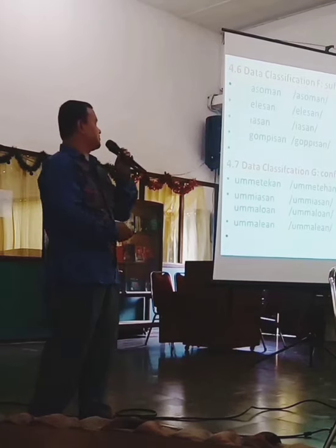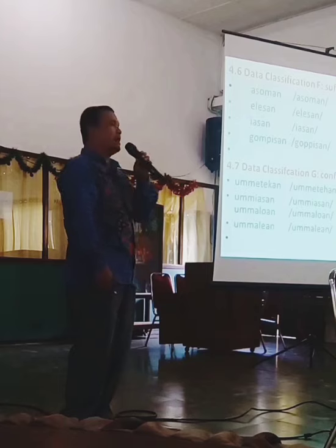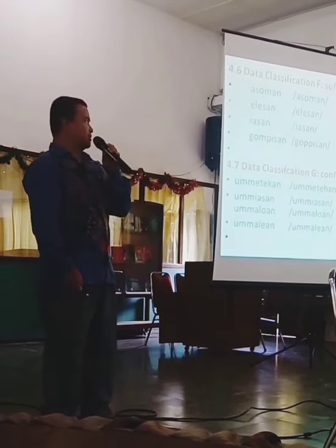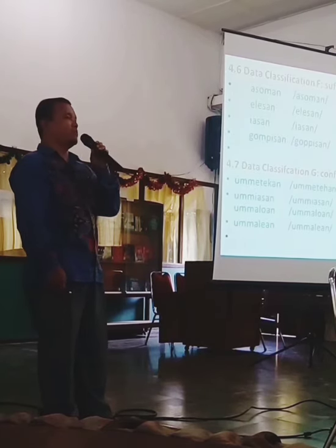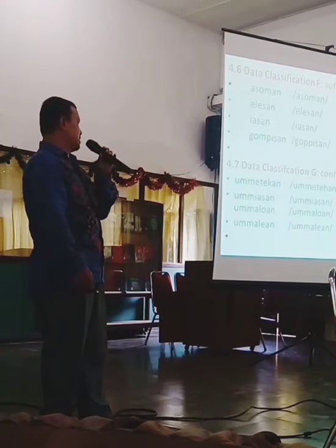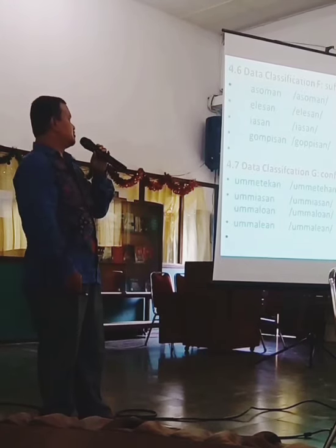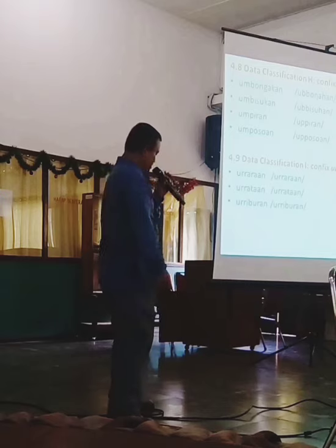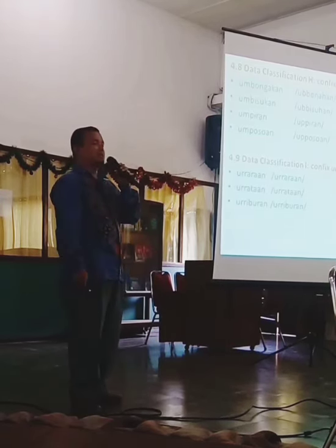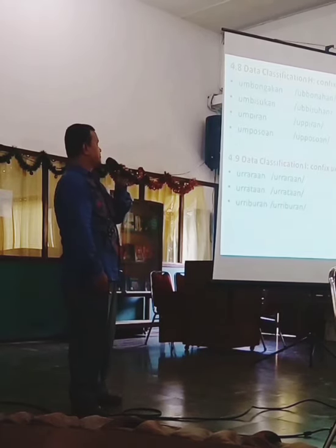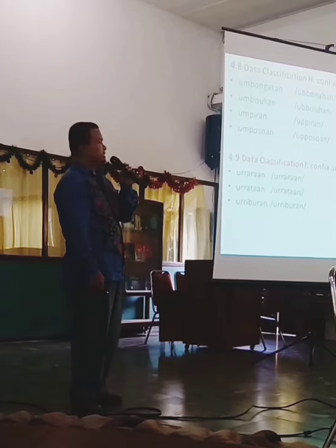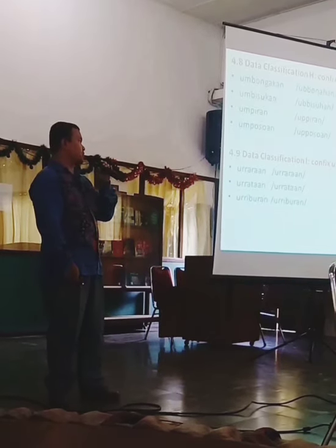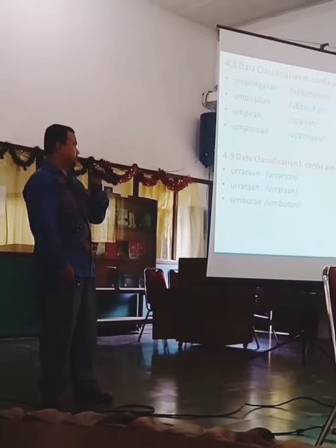Data classification F: adjective base plus suffix 'an,' like 'asot' plus 'an'; 'las' plus suffix 'an' becomes 'lasan,' meaning 'light,' and so on. Data classification G: confix 'um-an' — for example, 'metek' with confix 'um-an' becomes 'metekan,' meaning 'smaller,' and so on. Data classification H: confix 'um-an' again, but with different initial consonants of base adjectives. 'Bomak' plus confix 'um-an' becomes 'ubomak'; 'bisuk' becomes 'upisuman.' Classification I: confix 'um-an' with initial 'r' — 'rara' plus 'um-an' becomes 'kurarahan'; 'rata' becomes 'kurataan'; 'ribu' becomes 'urriburan.'